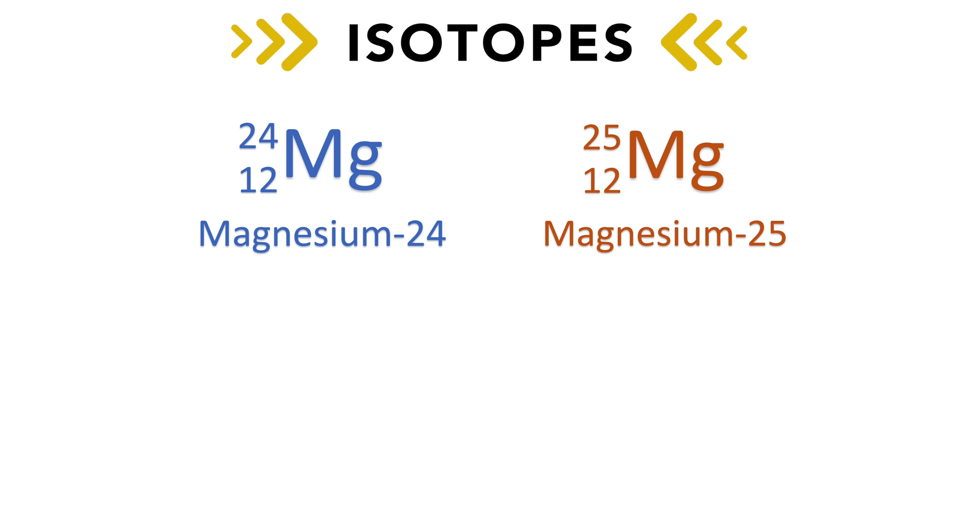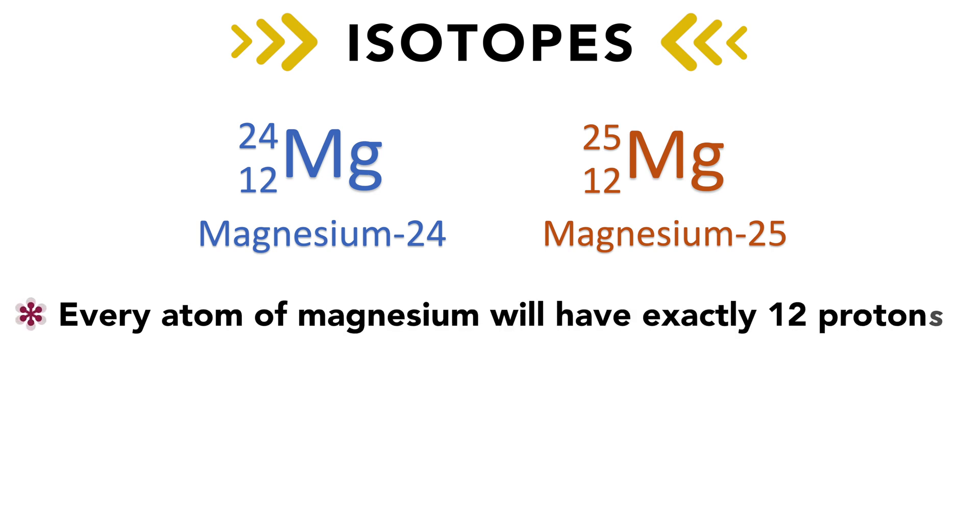This format allows us to quickly identify which element we are looking at, and allows us to easily determine the number of protons, neutrons, and electrons. Remember that every atom of magnesium will have exactly 12 protons, hence the atomic number of 12.